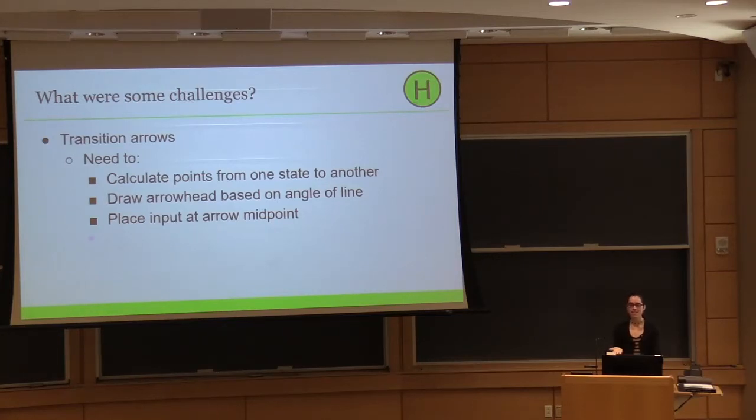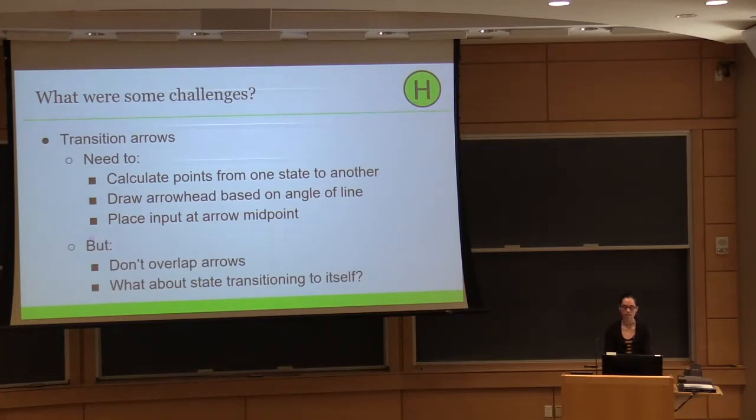So this might seem doable if you like math, which I don't. But if you get past all of that, there's a lot of things to consider here. There's a lot of details. So for example, if q0 transitions to q1, but q1 also transitions to q0, they're pointing to each other. You don't want those arrows to overlap. There needs to be some kind of offset. And what about states transitioning to themselves? What about if you have multiple transitions from one start state to another target state? So these are all things that I had to consider. And to summarize, it took a while to figure all of this stuff out.